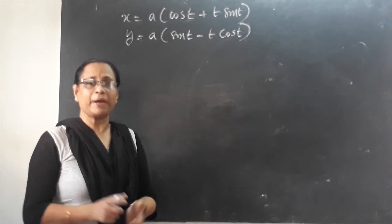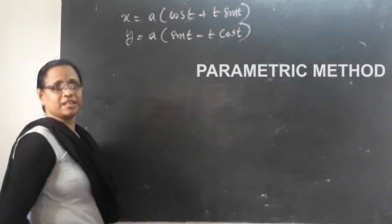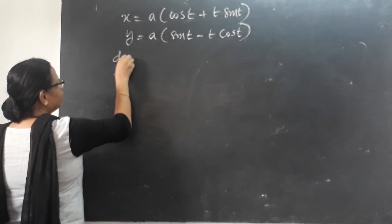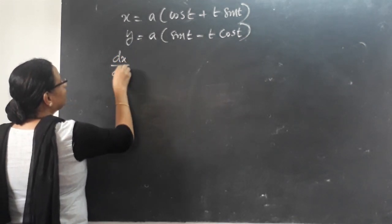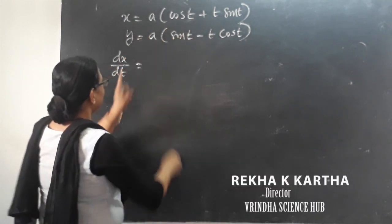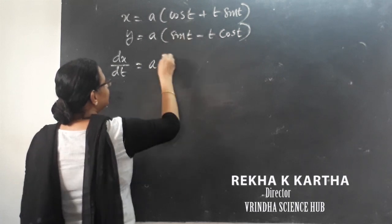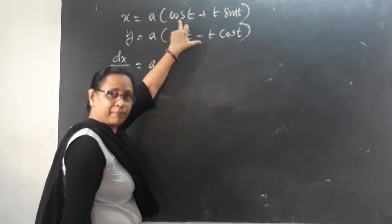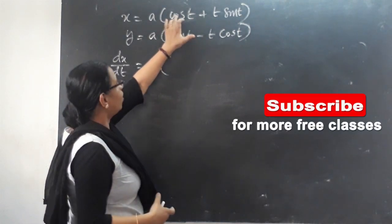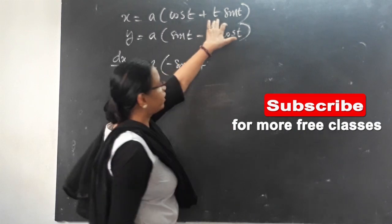The next method is the parametric method. Let's differentiate the parametric function. First, we have dx by dt — with respect to t, we differentiate here. Here, a is a constant. I applied the differentiation. Now, you can see: cos t minus t plus product rule.